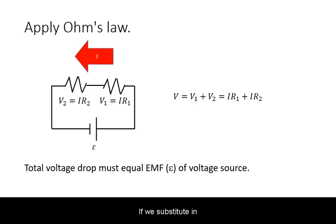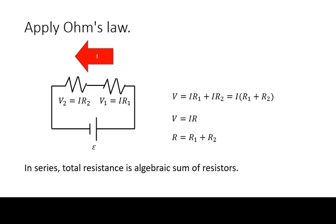If we substitute in the expressions for the voltages across each resistor, we find that the relationship between current and total voltage drop can be expressed in terms of an equivalent resistance. This resistance, like the voltage, will be equivalent to the algebraic sum of each element across the same circuit.